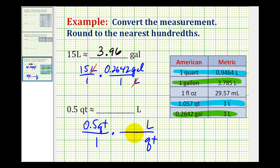And if we want to have a denominator of one, we'll have to use this first conversion here, where one quart is equal to 0.9464 liters.